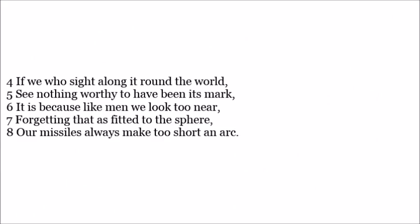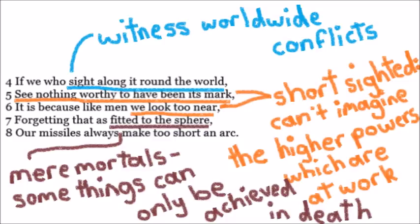Lines four to eleven read: 'If we who sight along it around the world see nothing worthy to have been its mark, it is because like men we look too near, forgetting that as fitted to the sphere our missiles always make too short an arc.' The tone shifts to a more thoughtful one as Frost starts to analyze our thought patterns. These are the most difficult lines to interpret — quite spiritual and deep.